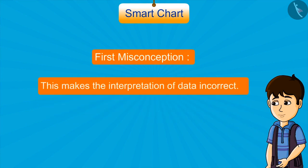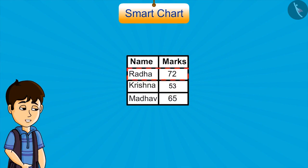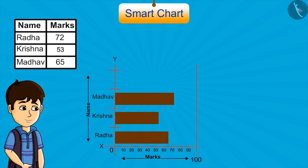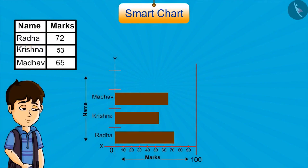Strip chart. This makes the interpretation of data incorrect. For example, look at this data. Here are the marks scored by three students in maths: Radha got 72, Krishna got 53, and Madhav got 65. Let's represent this in strips. If we place the strips like this, is it right? You can see that according to the chart, Radha got 65 and Madhav got 72. This is very unfair with Radha. We cannot show wrong data like this. Now see, this smart chart is perfect because it is showing the correct marks scored by students.